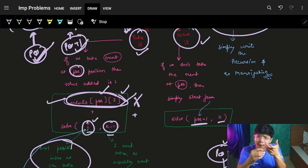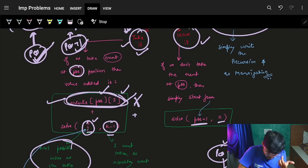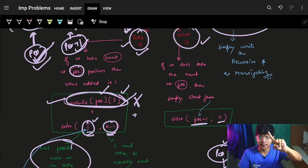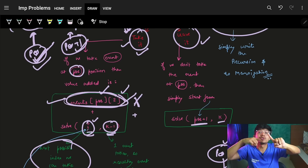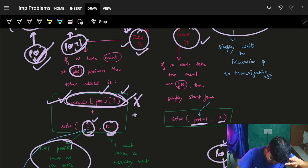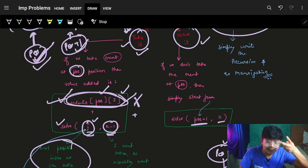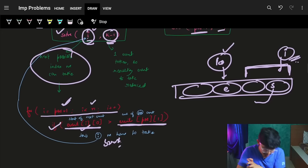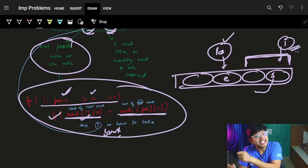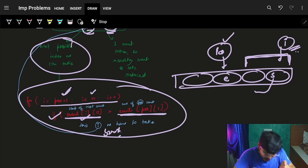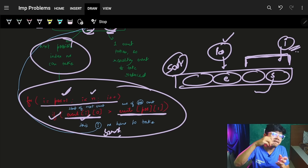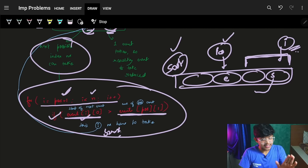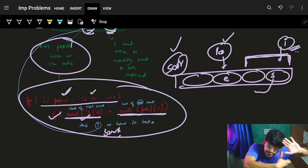To summarize the recursion-building flow: you started with one argument — position — then realized you need k as well. When taking, you add the event's value. You then find the next valid index, which requires sorting first. This is how the recursion naturally evolves from thinking about what changes at each step.